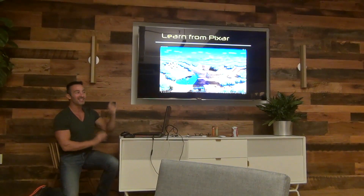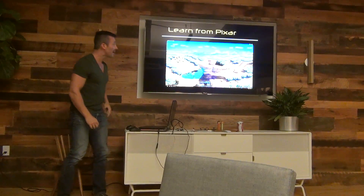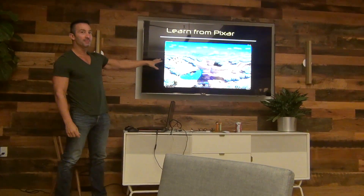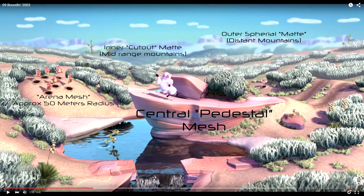I was inspired by this Pixar short called Bound, from about seven or eight years ago. What I like about it is you can learn a lot about how they generate a believable set. They've got a central mesh — a pedestal for the sheep to dance on — with meshes all around it as the camera orbits. To really sell the shot, back there they've got a spherical mat all the way around the outside with distant mountains that are just painted on, and clouds that are painted on but that move. There's another layer, a green mountain range, that's not 3D — just a cutout — but it moves with parallax relative to the background as the camera orbits. The net result is it really feels like you're in a place.